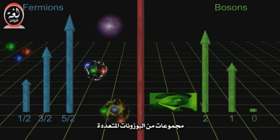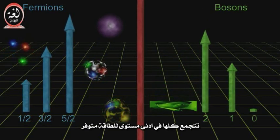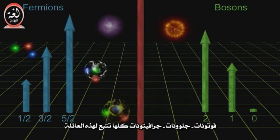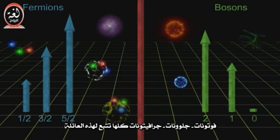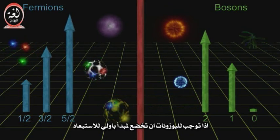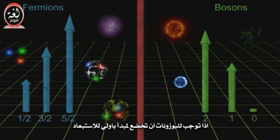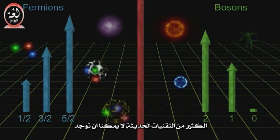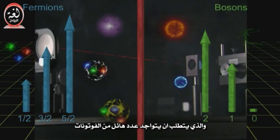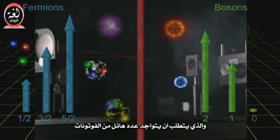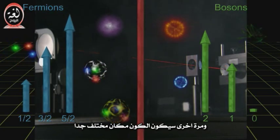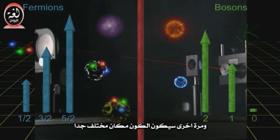Groups of multiple bosons will all gather in the lowest available energy state. Photons, gluons, gravitons all fall into this family. If bosons had to obey the exclusion principle, many modern marvels could not exist — like lasers, which require that huge numbers of photons be in the same state at the same time. And again, the universe would be a very different place.